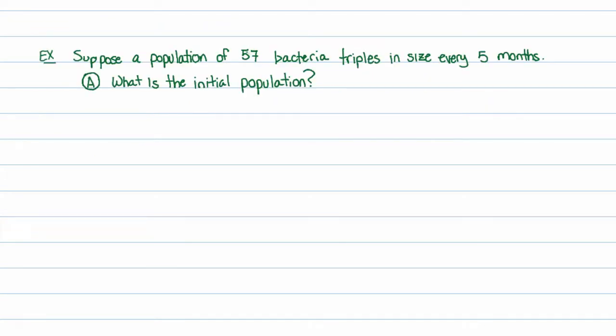Let's take an example. Suppose a population of 57 bacteria triples in size every 5 months. This is indicative of exponential behavior because you are multiplying the population by some number every chunk of time — in this case, multiplying by 3 every 5 months. The word 'triple' tells us it's growing. So what is the initial population? Let me write the formula for an exponential function first.